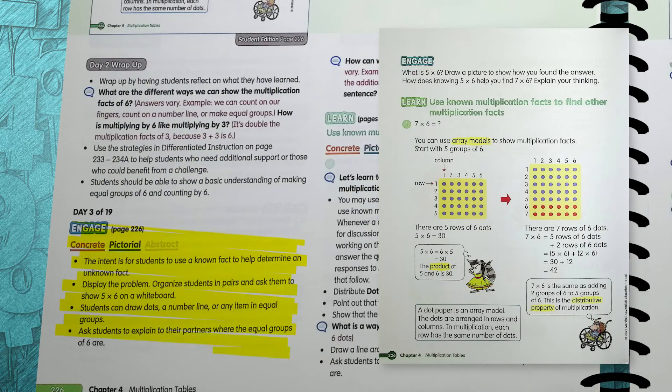Day 2 of section 1 begins with the engage section again. You can start by asking your students to draw a picture of 5 times 6 and think about how that picture could help them find 7 times 6. You can give your students a few minutes to try some ideas to make their own connections.